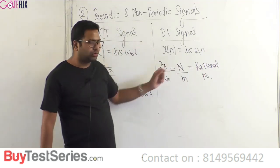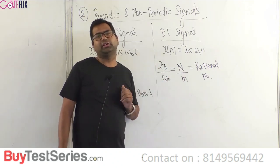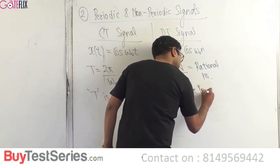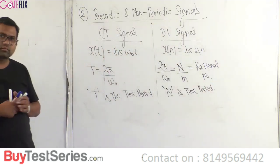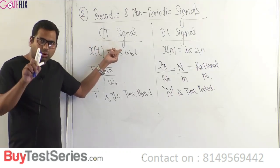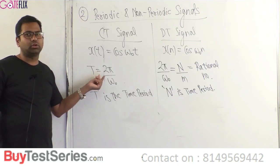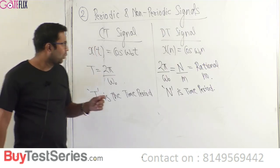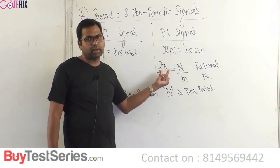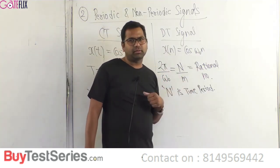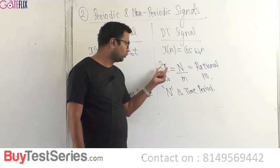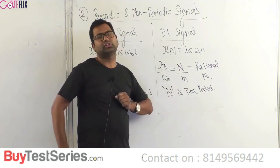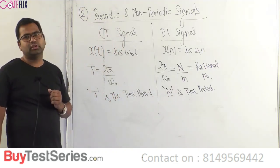If the ratio 2π/ω₀ comes out to be irrational, then x(n) is non-periodic. To summarize: a continuous time signal is always periodic with period T = 2π/ω₀. For discrete time signals, we must check whether 2π/ω₀ is rational — if rational, periodic with period N; if irrational, non-periodic. Capital N denotes discrete time period; capital T denotes continuous time period.